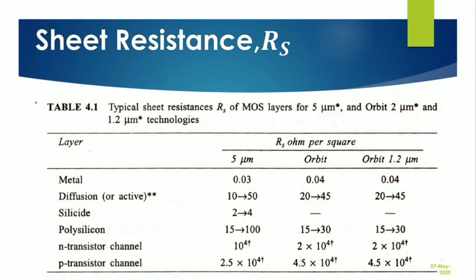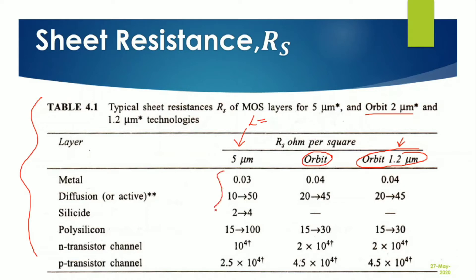Now the standard sheet resistance table. This table defines three technologies: 5 micrometer technology, orbit technology (2 micrometer), and orbit 1.2 micrometer technology. The technology defines the length of the channel — for 5 micrometer technology the channel length is 5 micrometers, for orbit technology it is 2 micrometers, and for orbit 1.2 technology the length is 1.2 micrometers. Using this table you calculate the sheet resistance value.